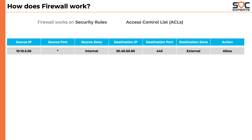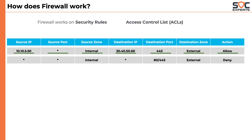In the first rule, when the firewall sees traffic from source IP address 10.10.5.50, from any source port (asterisk represents any), coming from the internal zone, trying to reach destination IP address 30.40.50.60 on port number 443, which is on the external zone, the firewall allows the connection. The second rule states that any source IP address with any source port coming from the internal zone and communicating to any IP address on destination port 80 or 443 in the external zone will be denied.